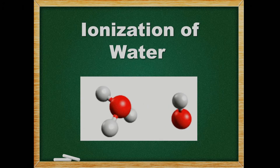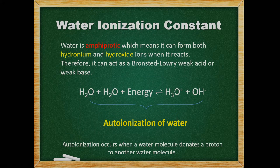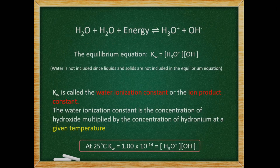Ionization of water. Water is an amphiprotic molecule, which means it can form both hydronium and hydroxide ions when it reacts. Therefore, it can act as a Bronsted-Lowry weak acid or weak base. Auto-ionization occurs when a water molecule donates a proton to another water molecule. The word auto means self, so auto-ionization means the same thing as self-ionization. By looking at the equilibrium equation, we are able to create an equilibrium constant expression. The water ionization constant is the concentration of hydroxide multiplied by the concentration of hydronium at a given temperature. At 25 degrees Celsius, the water constant Kw is 1 × 10⁻¹⁴.